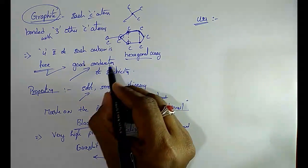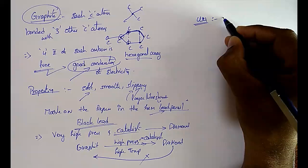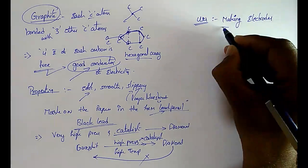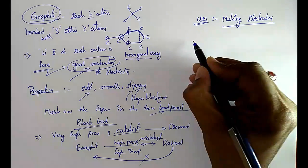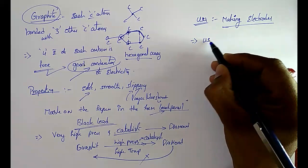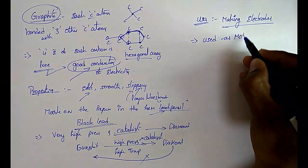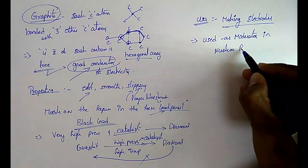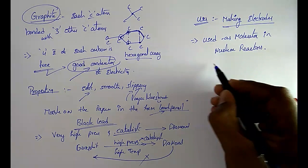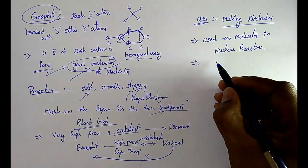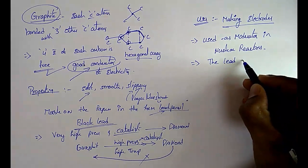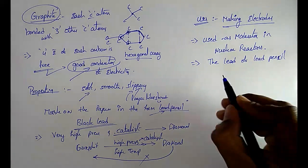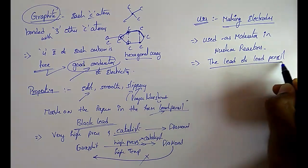The important uses of graphite: since it is a good conductor of electricity, it is used for making electrodes. It is also used as a moderator in nuclear reactors. And it is used for the lead of lead pencils.